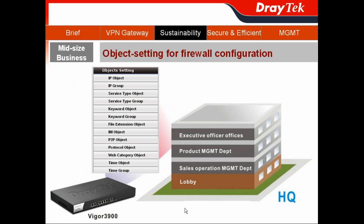In ABC company's scenario, they have a four-level building as their state headquarters. The first floor is for the lobby, the second floor is for the sales operation management department, the third floor is for the product management department, and the highest floor is for the executive officers.